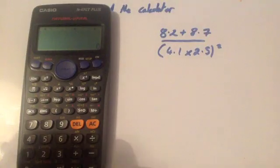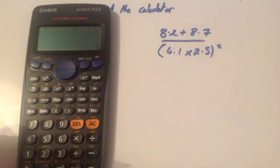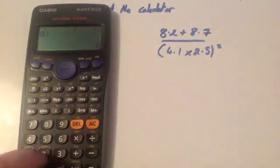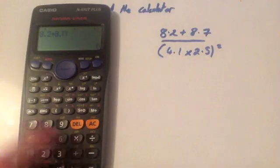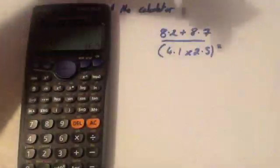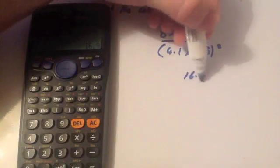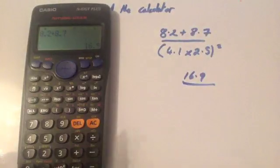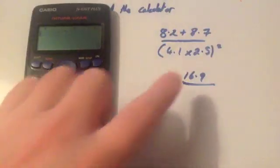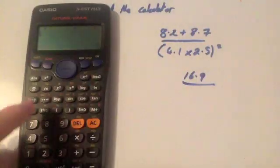Now, either using brackets or doing it out separately. Okay, so what I mean by that is you could do 8.2 plus 8.7. Press equals, and then write the sum out again, and do 16.9 divided by. And then working out in bits. So then the next part would be 4.1 times 2.5.